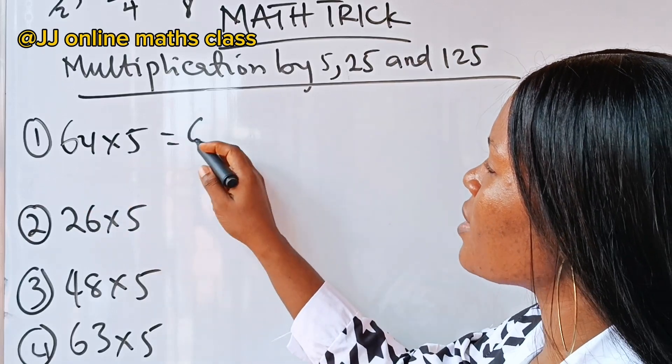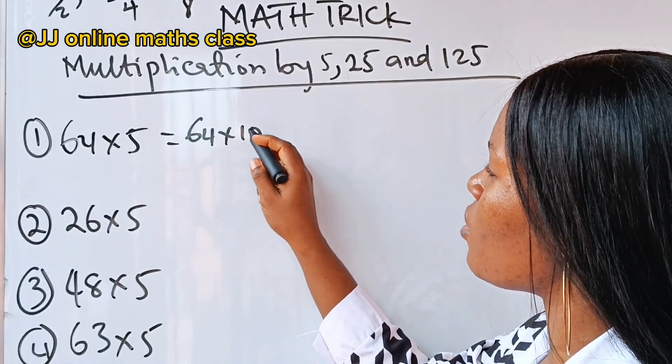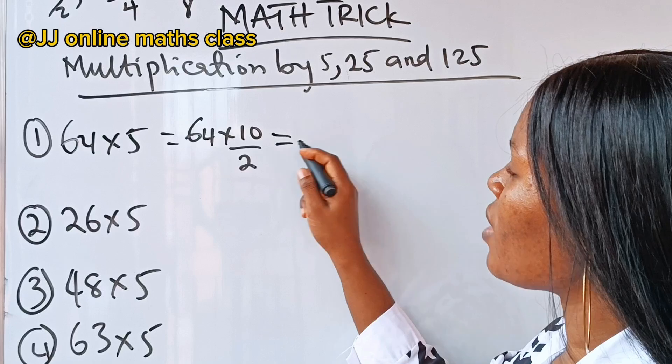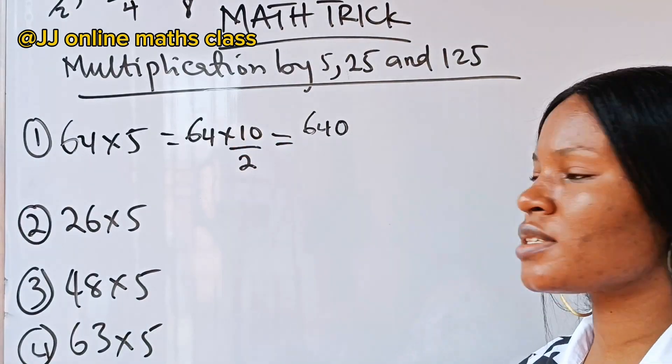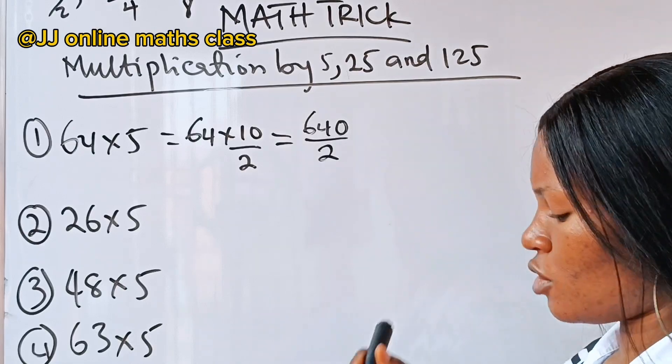For this one, 64 multiplied by 5 is the same as 64 times 10 over 2. Now, what is 64 times 10? 640, right? Just add 0 in front of 64. Then divide by 2.